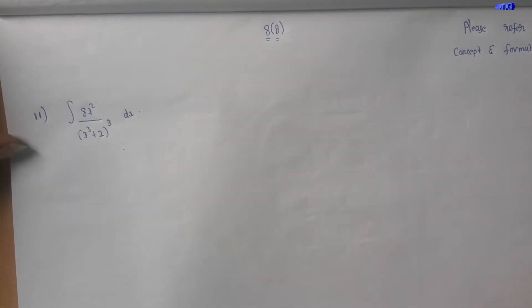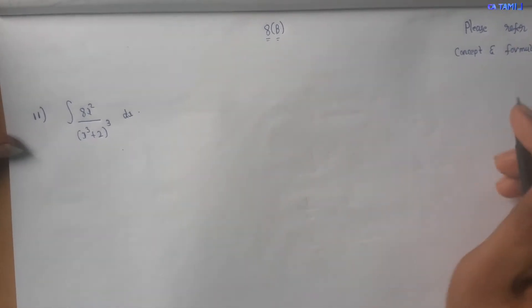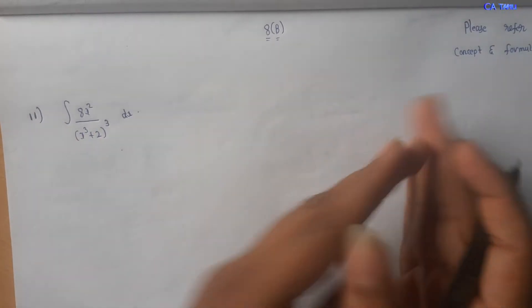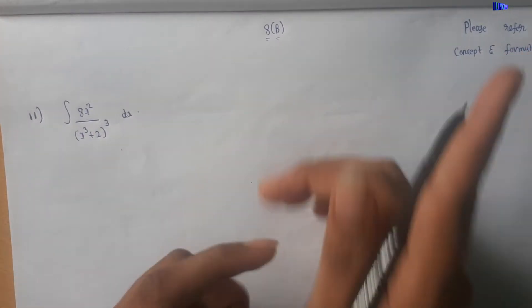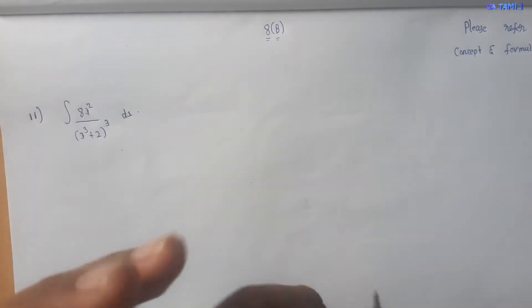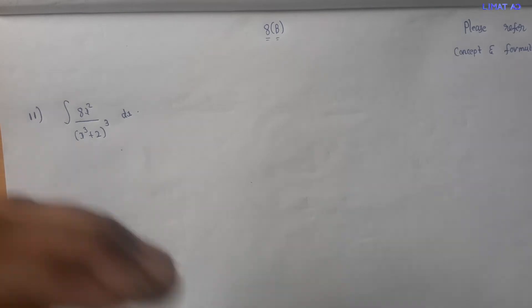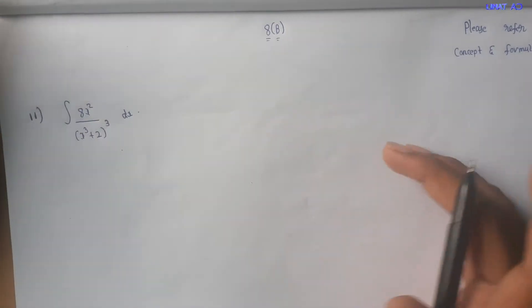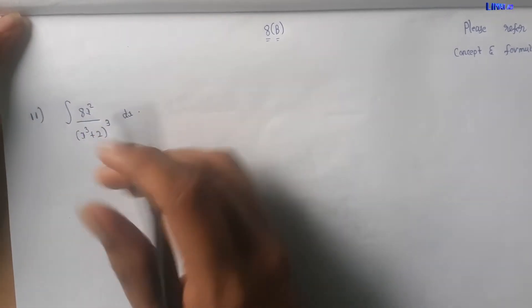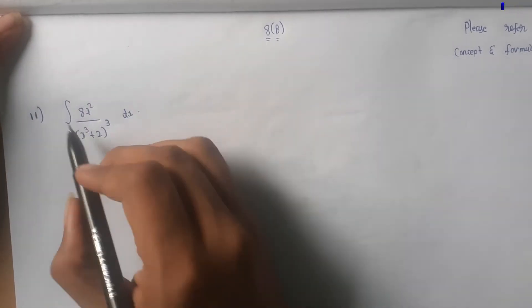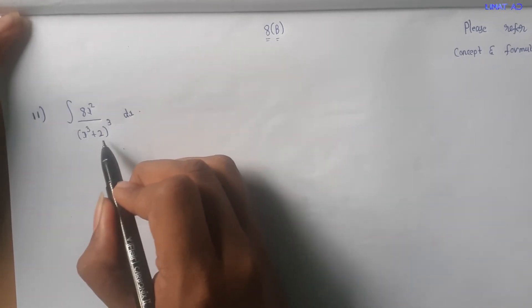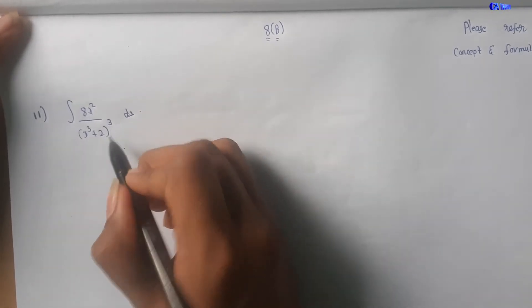Please refer to our concept and formula video — we are already using the concept and formula. Check the i-icon to see the path. If we use the formula, we will be able to solve the sum. The 11th sum: the integral of 8x² divided by (x³ + 2) all cubed.